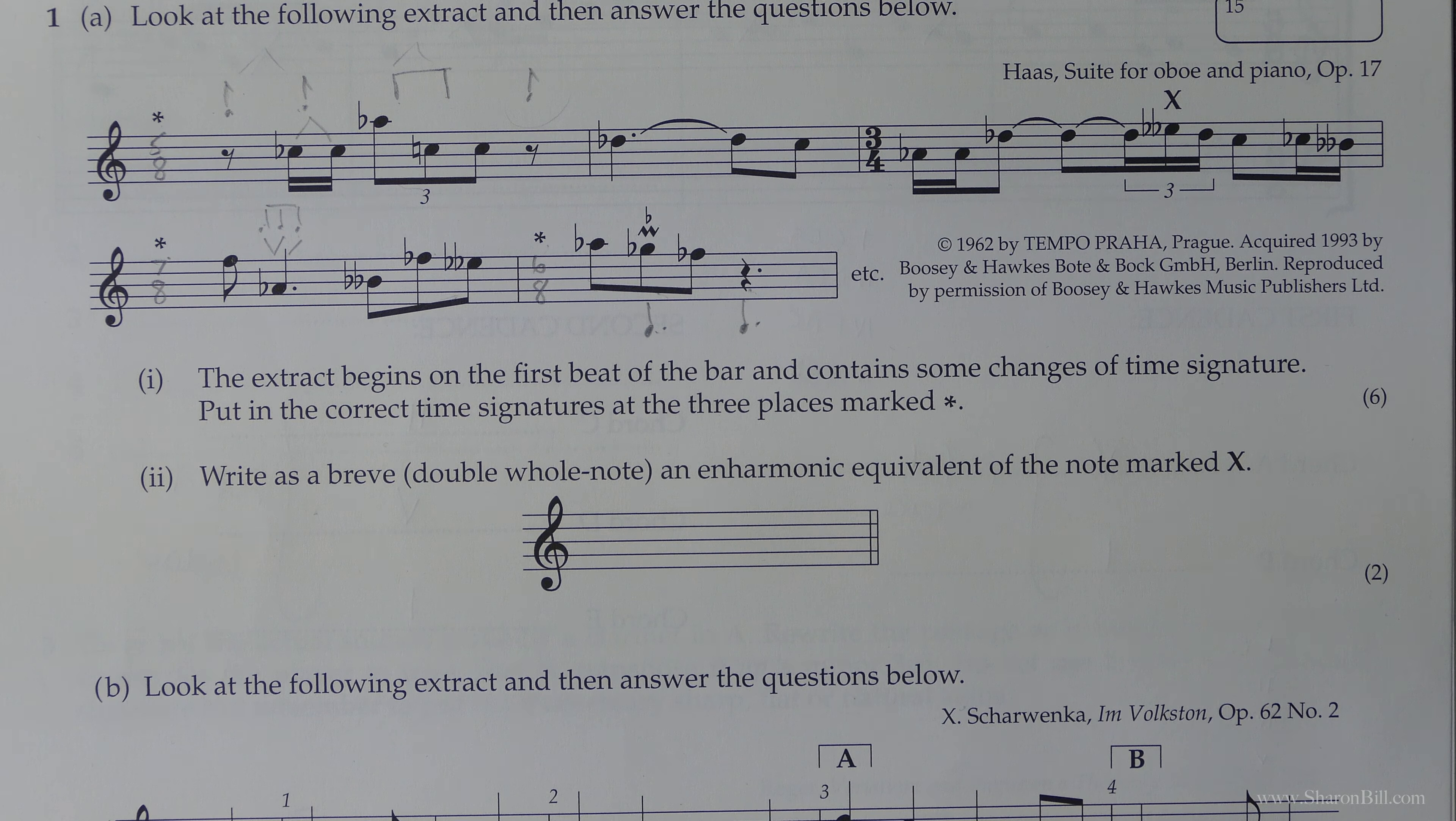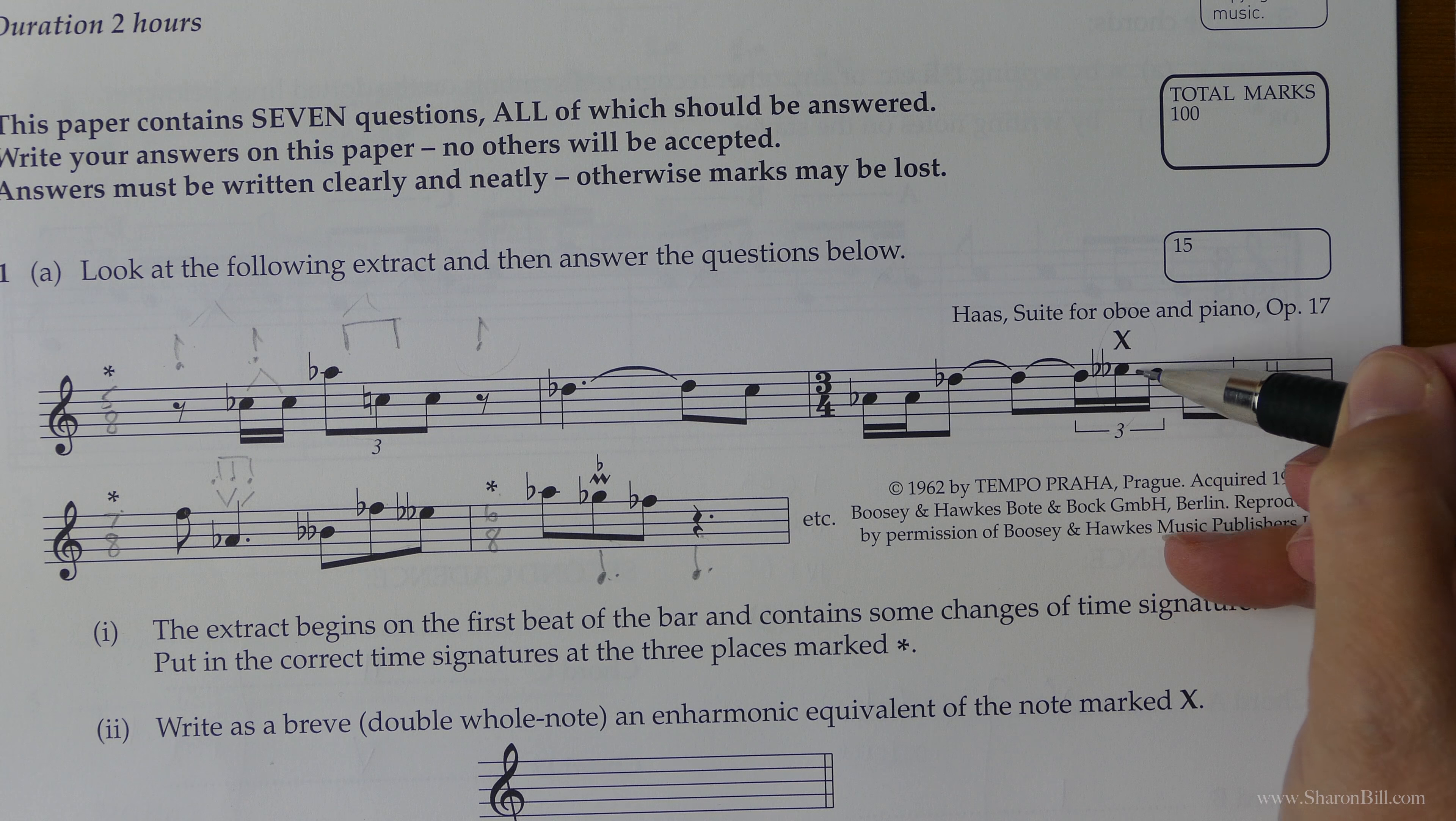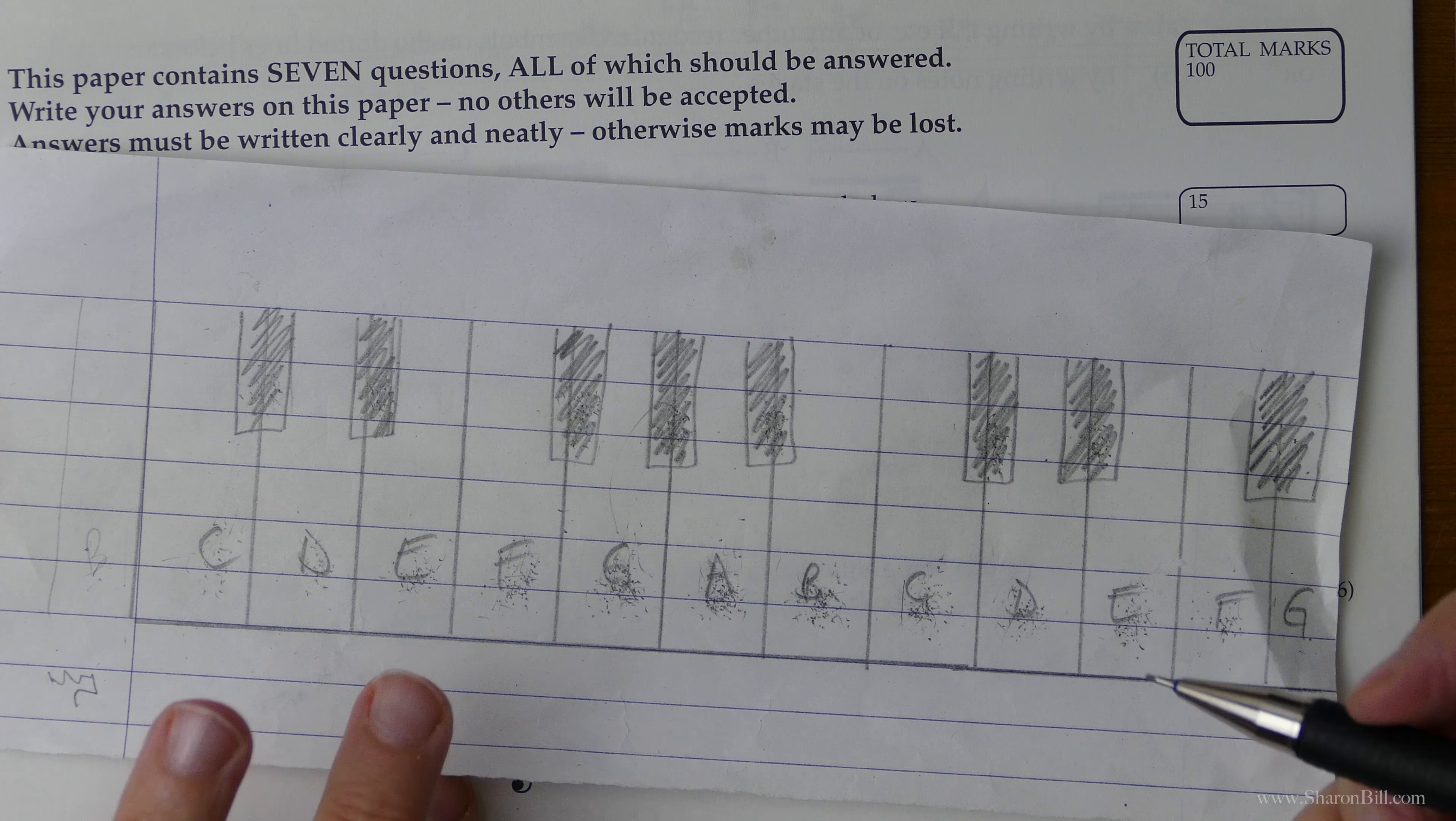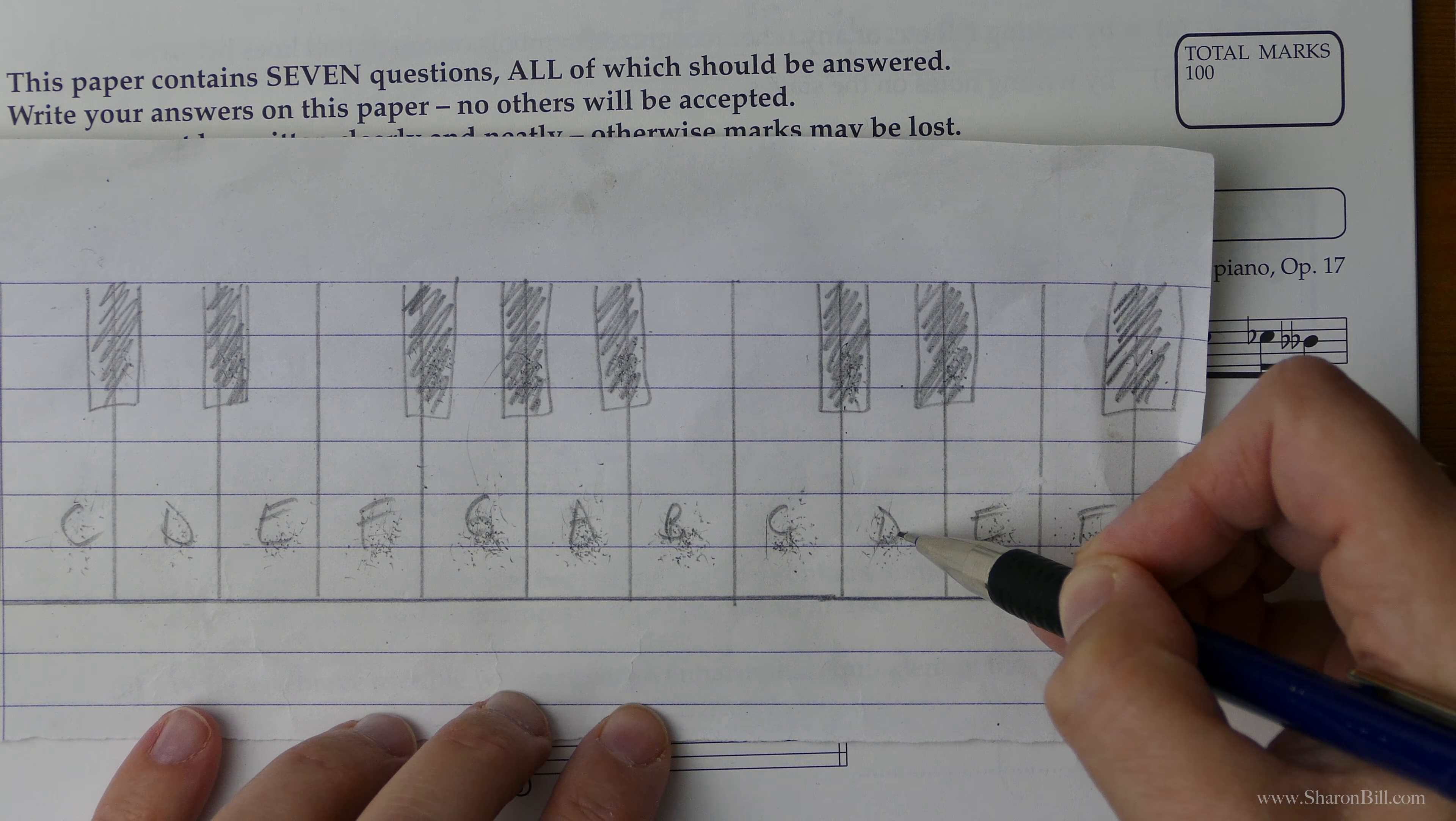So the next question we're asked to write as a breve or a double whole note the enharmonic equivalent of the note marked X. So that's this one here. Notice we're in the treble clef. So here we have an E double flat. And so if we just look at that, E flat, E flat, flat could also be called a D. So that's the most obvious one I would suggest.